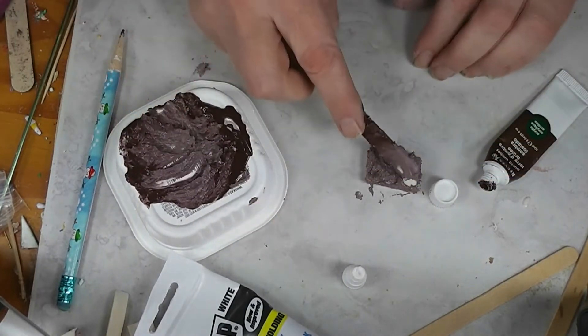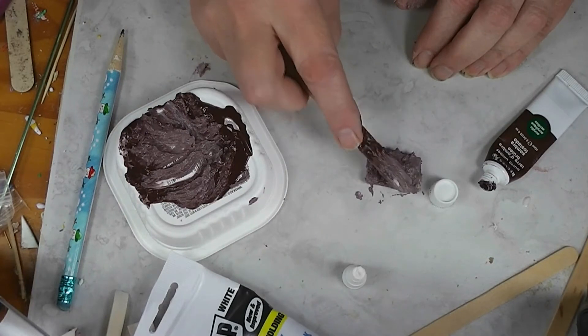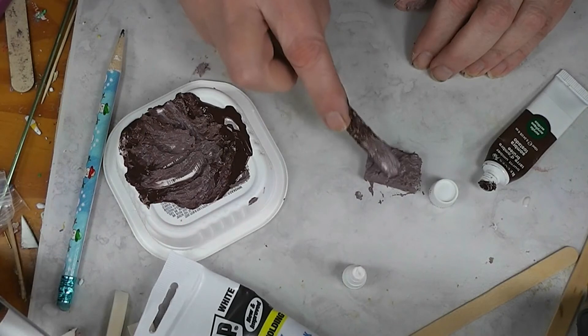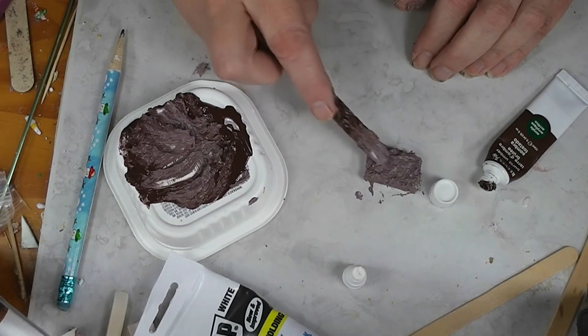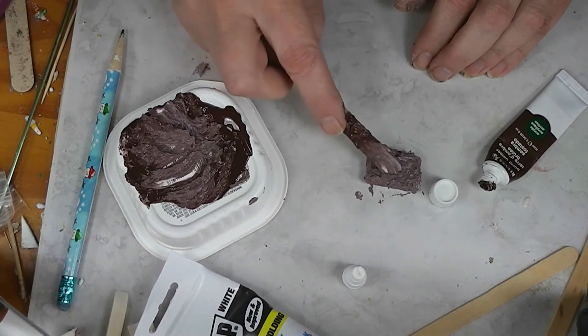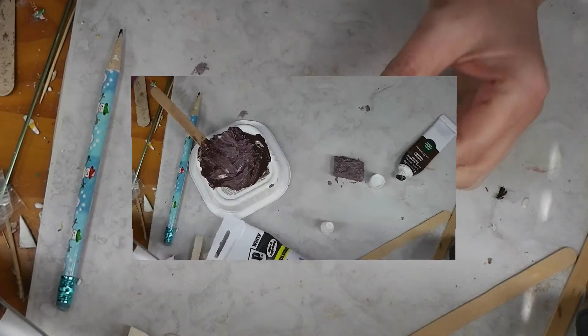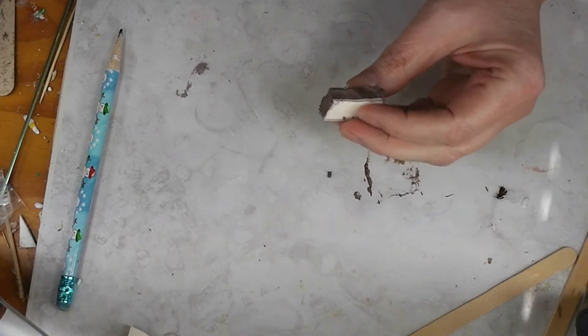And you can make any color frosting you want. You could make pink or yellow or you can leave it white, or whatever color your dolls like their frosting. So we're going to let our little cake dry, and when that's dry I'll be back and we'll see how it looks.